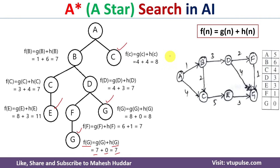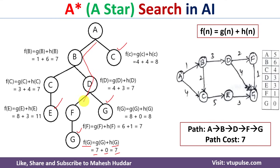We have reached the goal node from the initial state. The optimal path found is A → B → D → F → G, and the path cost is 1 + 3 + 2 + 1 = 7. In summary, we applied the A* search algorithm to the given graph and found the optimal path from initial state A to goal state G, along with the path cost.